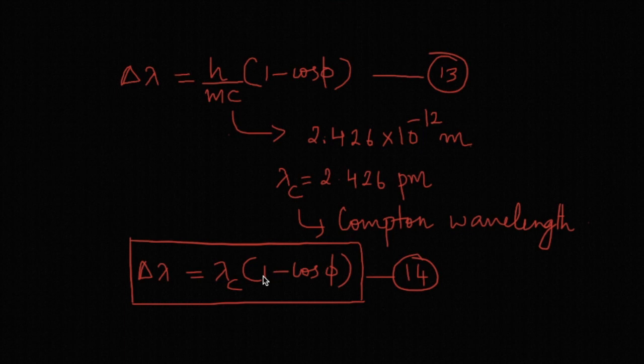So this equation delta lambda equals lambda c times 1 minus cos phi. Here delta lambda is the wavelength change of the photon, lambda c is the Compton wavelength, and phi is the angle of scattering of the photon.